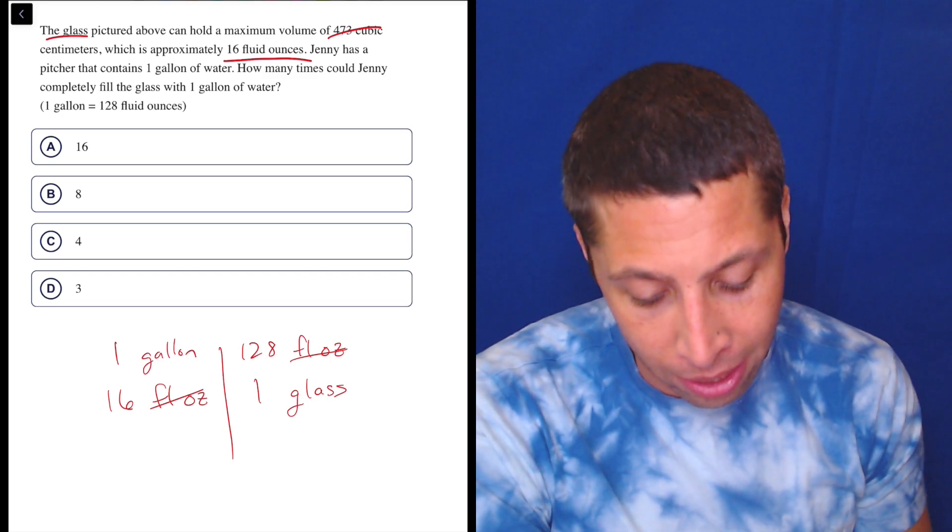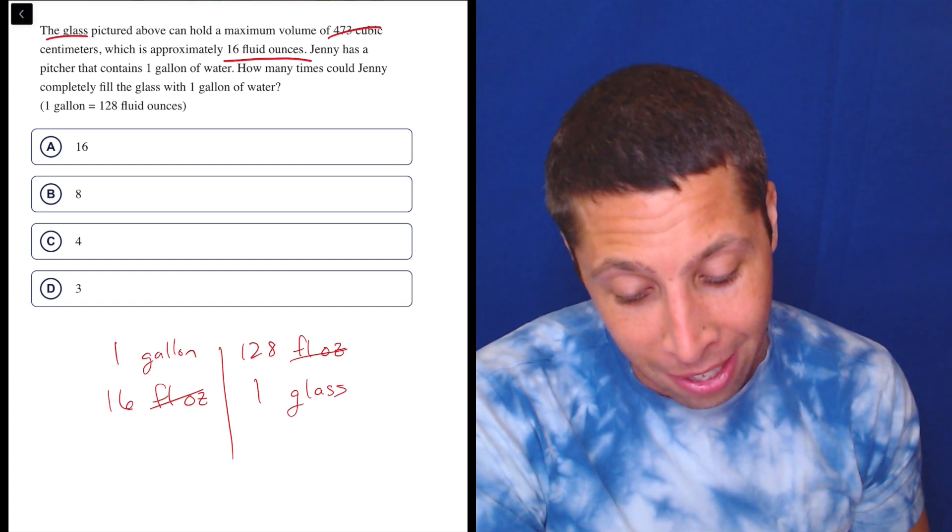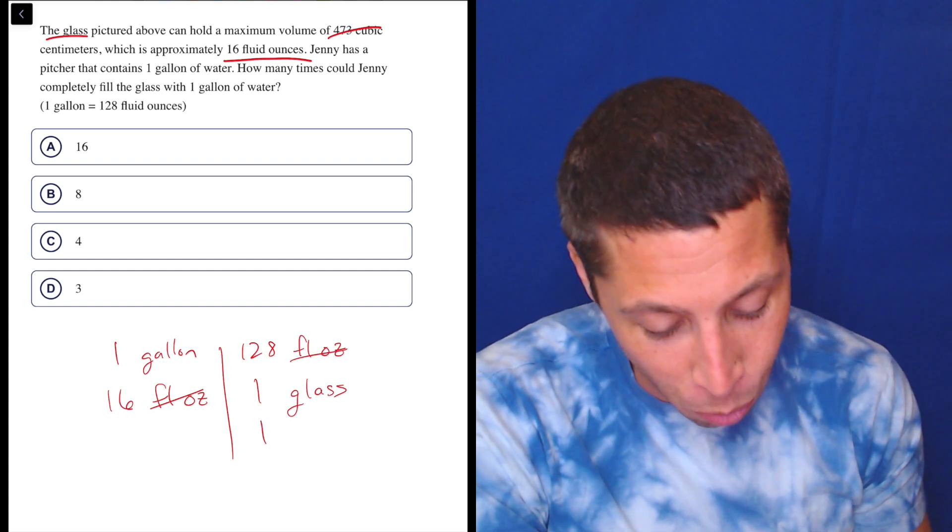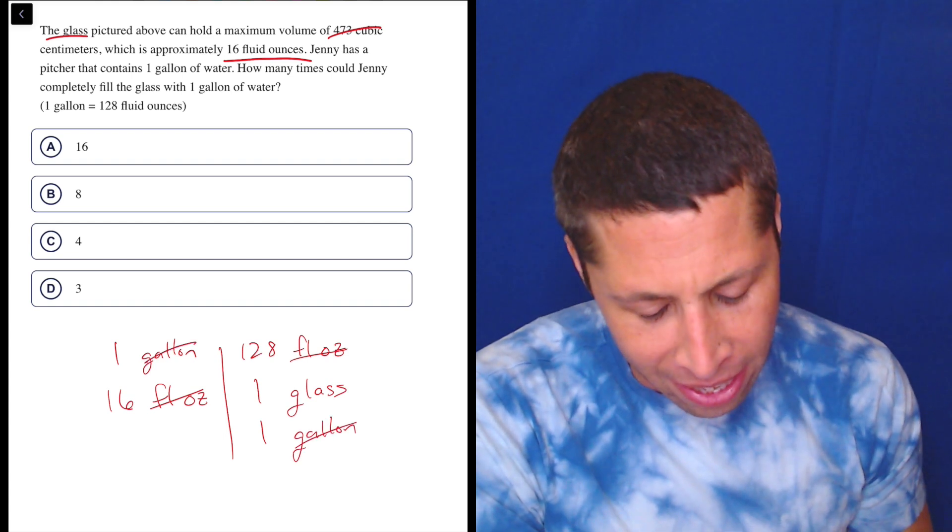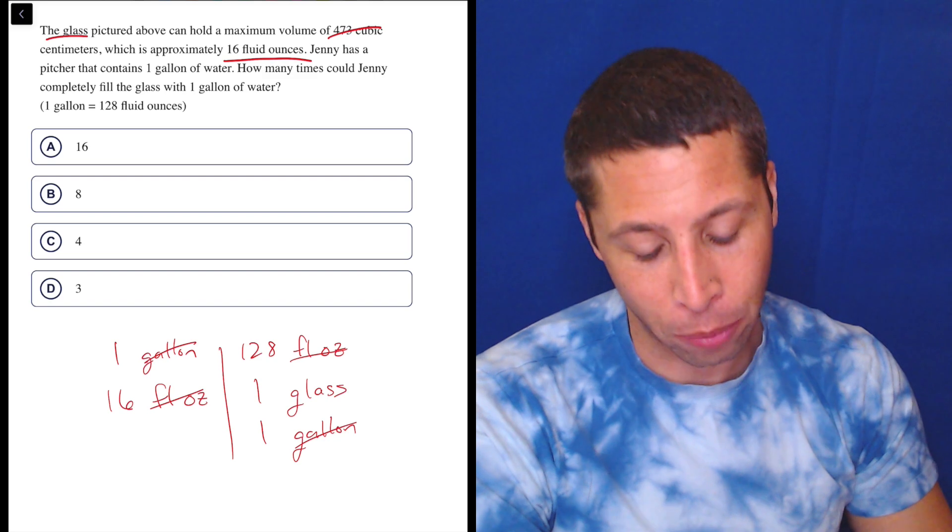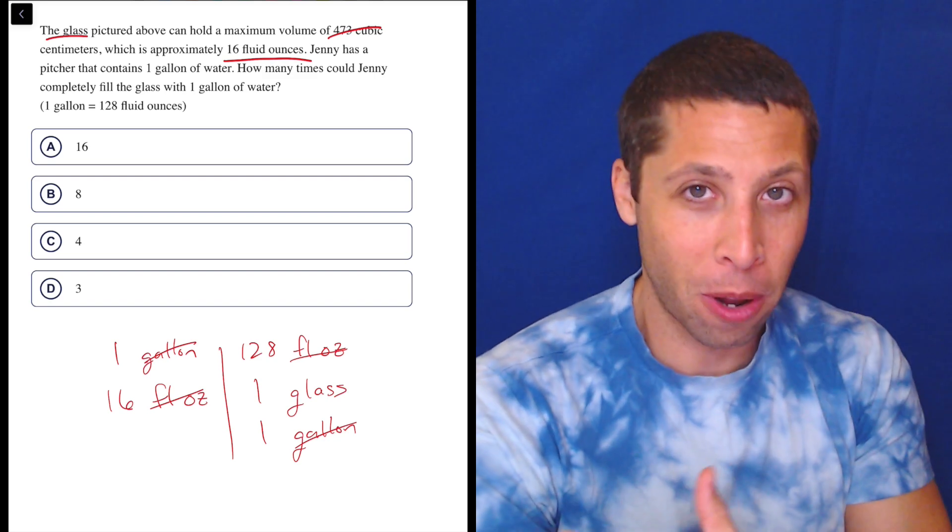Now, Jenny has a pitcher that contains one gallon of water. Okay, so if we really want to do it, one gallon, that's going to get rid of that. Now we could insert like a pitcher here. We could say one gallon is one pitcher. How many glasses is the one pitcher? So we could do that kind of two steps. In fact, we'll do it. So one gallon is one pitcher.